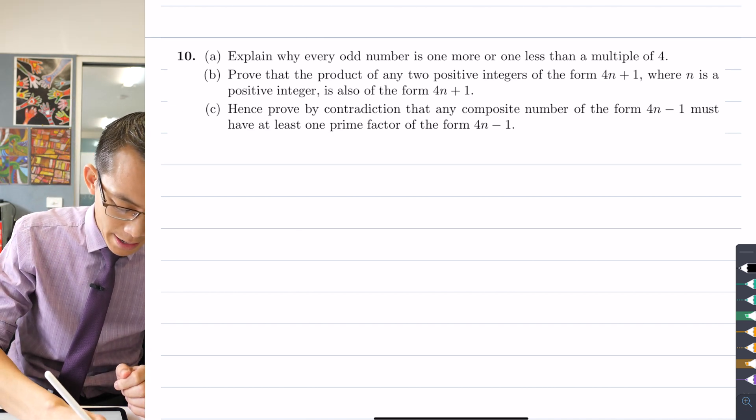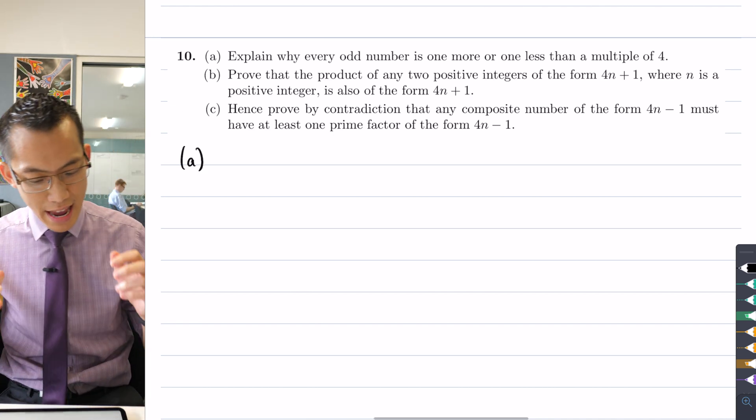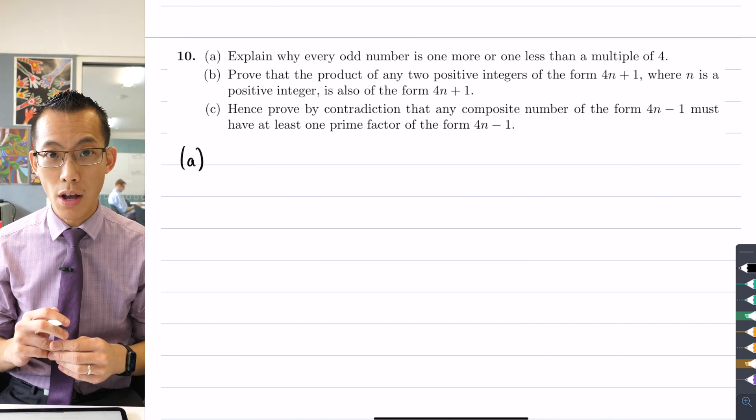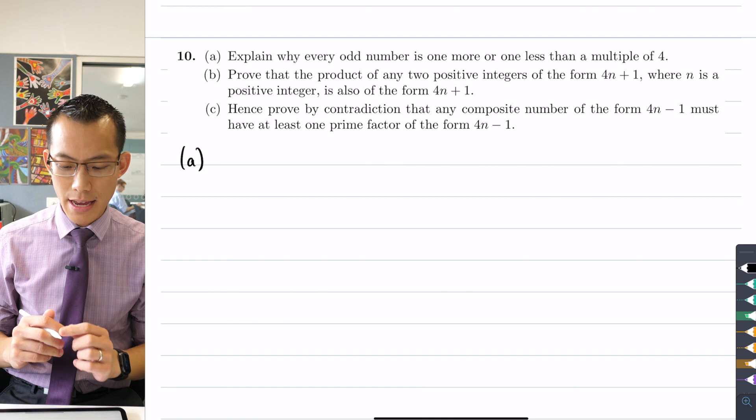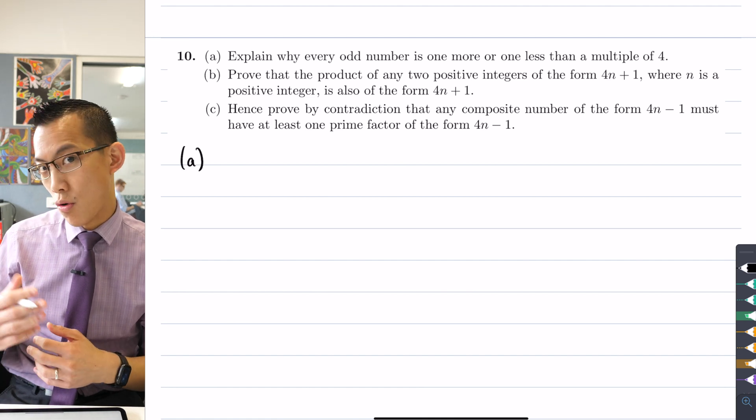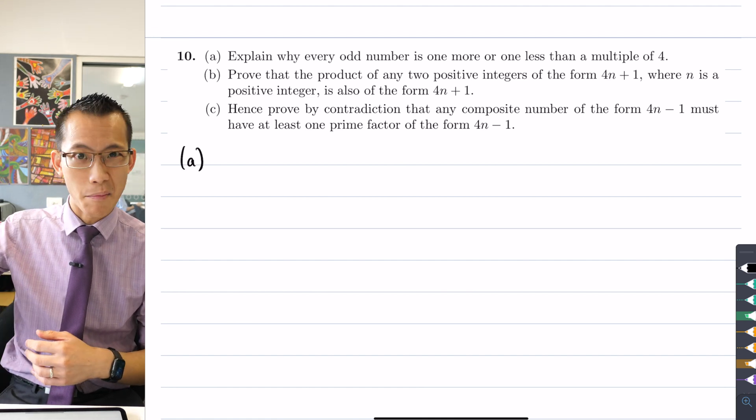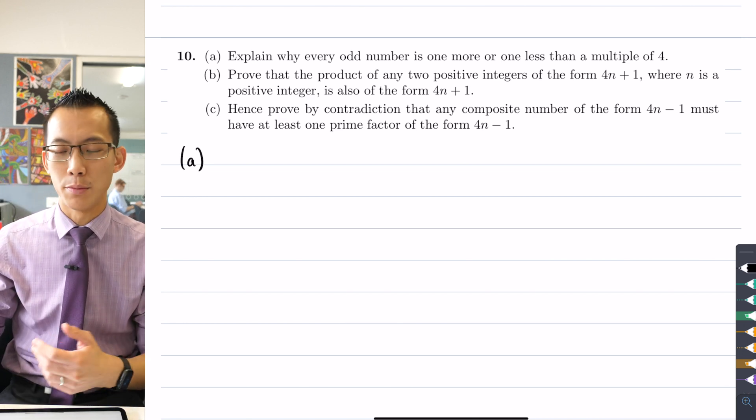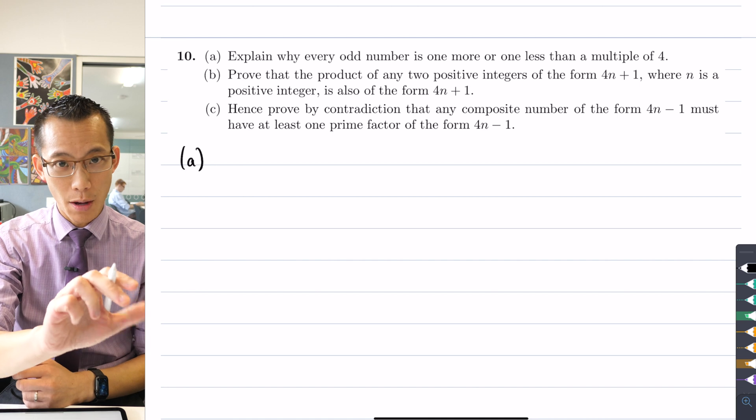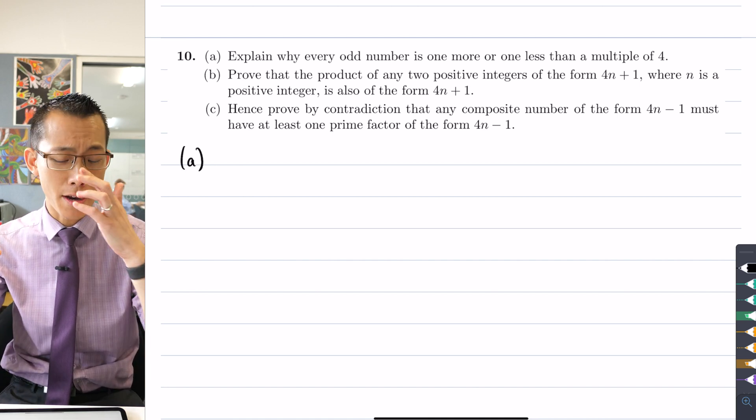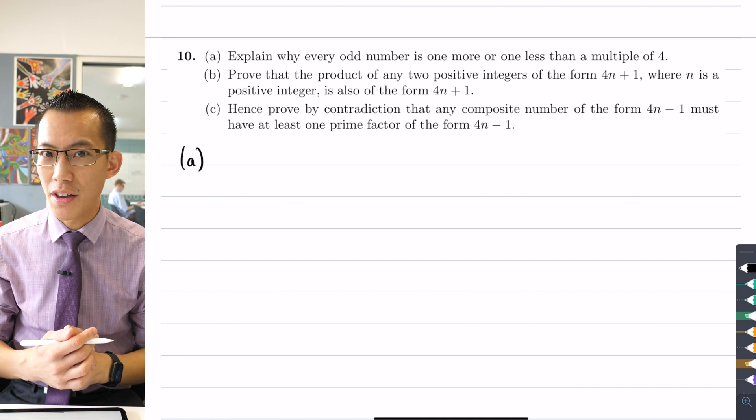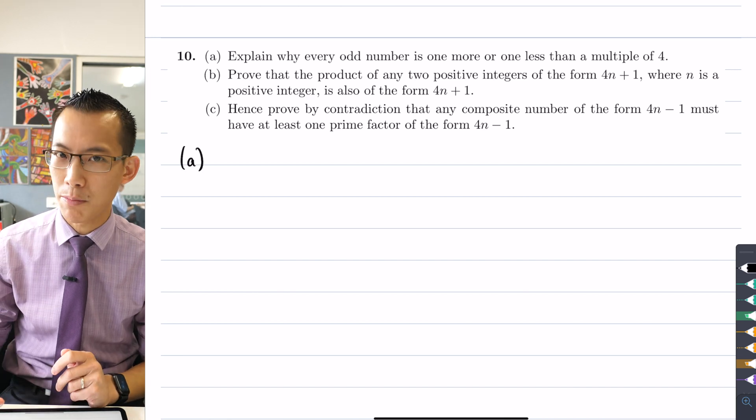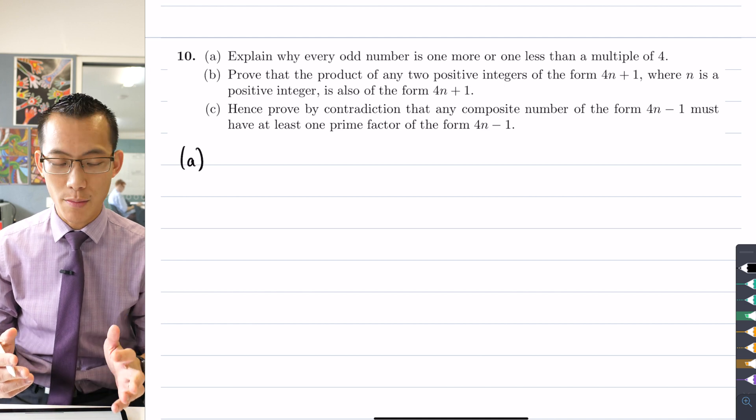To start with part A, if we want to say that every odd number is one more or one less than a multiple of four, then what we're trying to say is all the numbers that are one more than a multiple of four make up a sequence of numbers, and all the numbers that are one less than a multiple of four make up another sequence of numbers. If we combine those two sequences together, we should capture every single odd number. So how can we explain that? Well, we can do it without too much trouble.